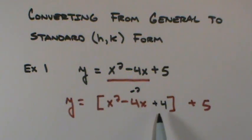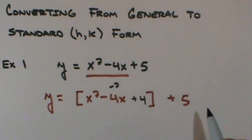And you can't just randomly go about adding numbers to equations. So because I've added 4 to this equation, I must balance by subtracting 4 to the same equation.